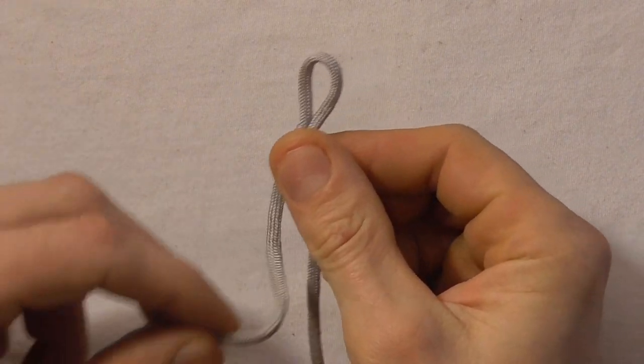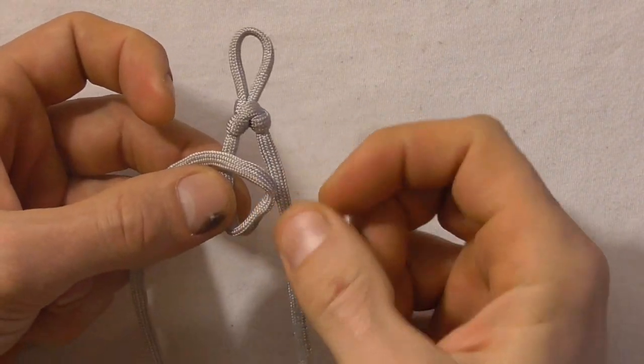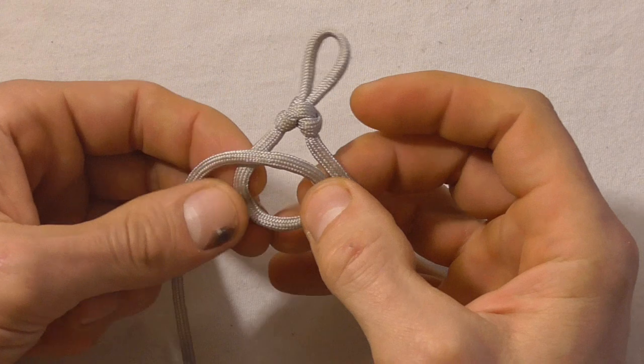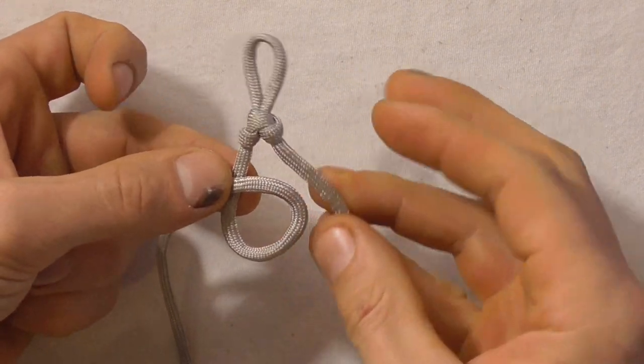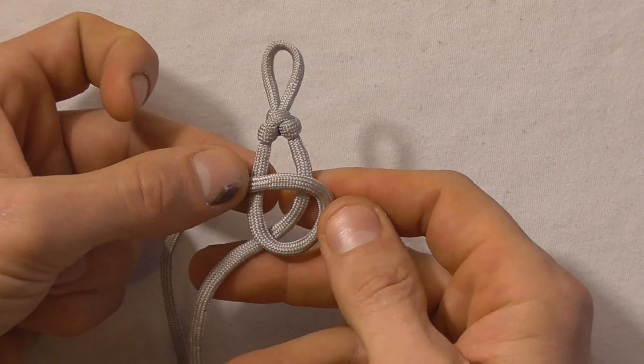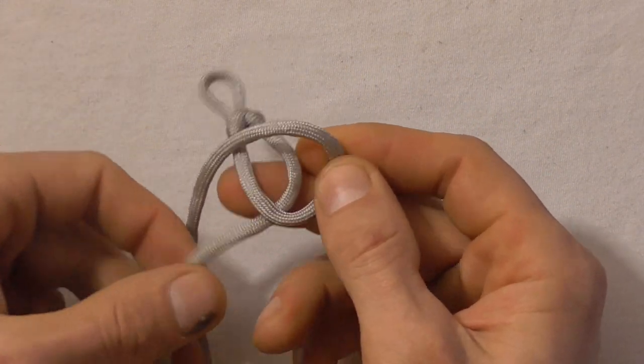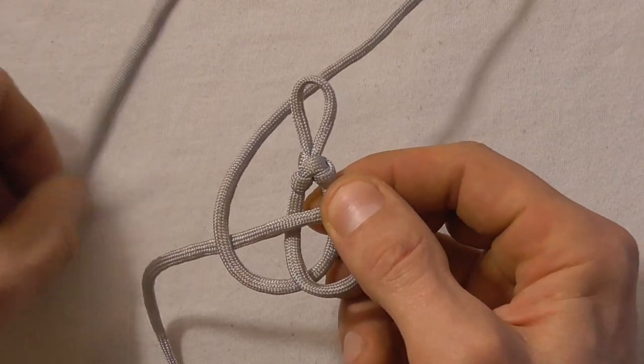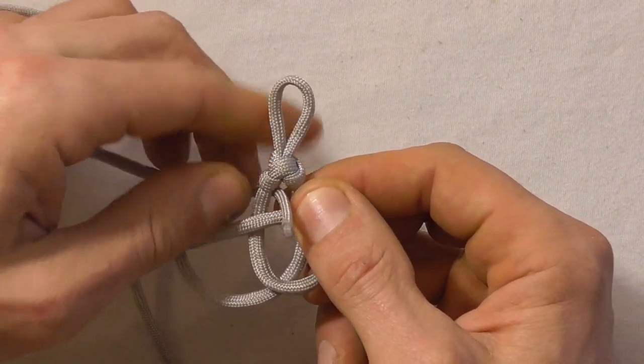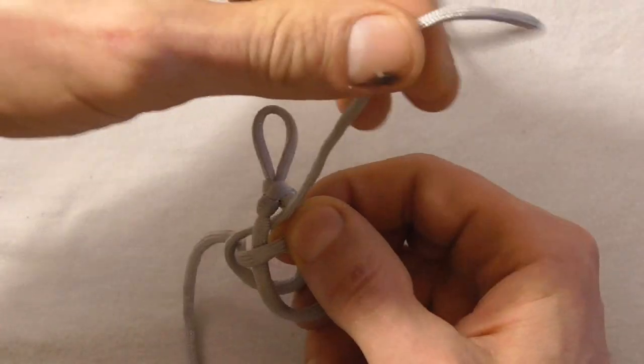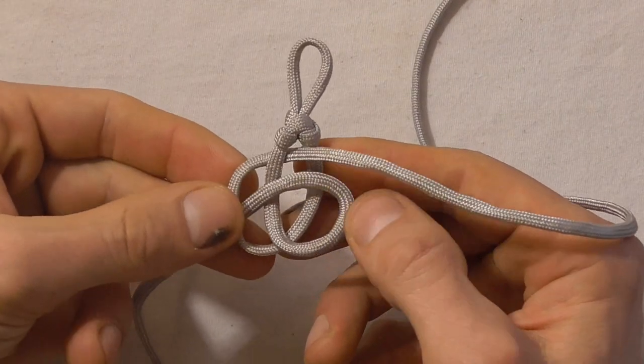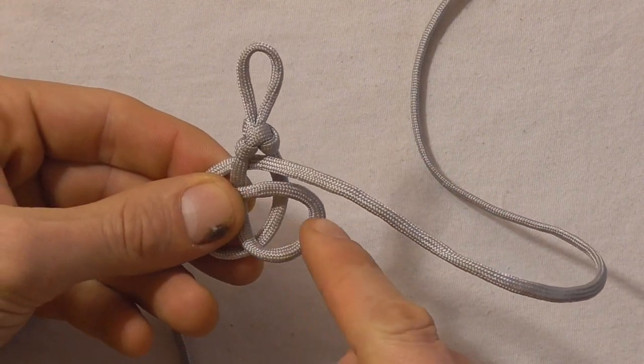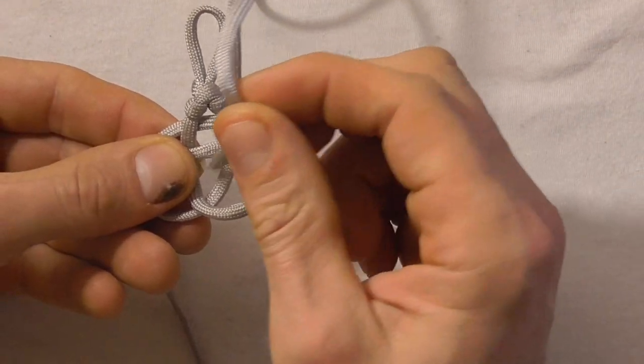Once we've made our initial loop we can start making our Josephine knots and we do that by making an overhand loop in the left hand side and then with the right hand strand come in underneath and then over, tuck our end up through that top section. And then we want to do an over, under, over weave through that last bit.